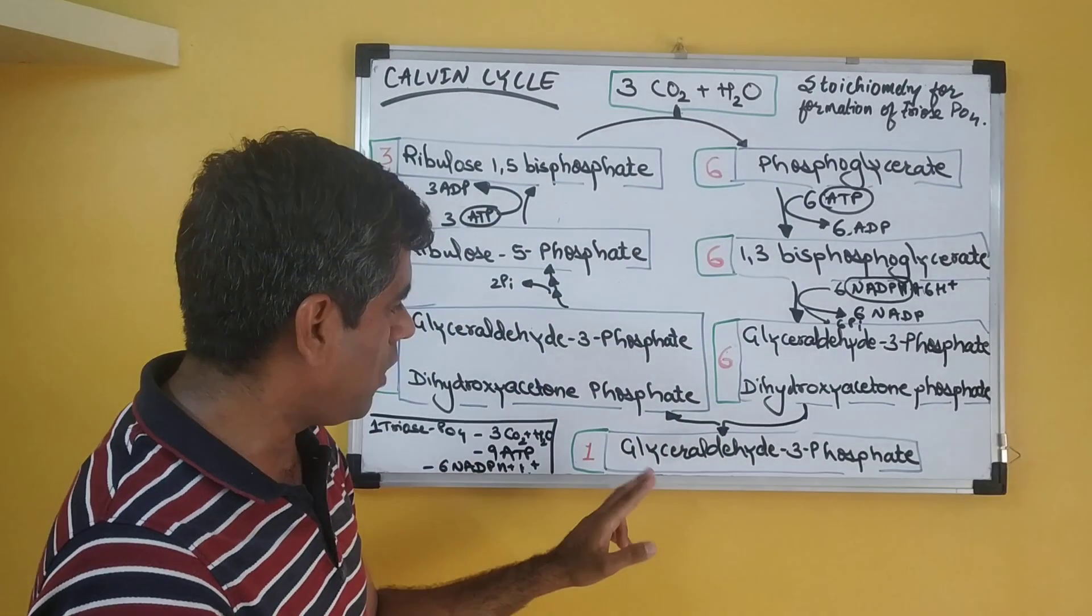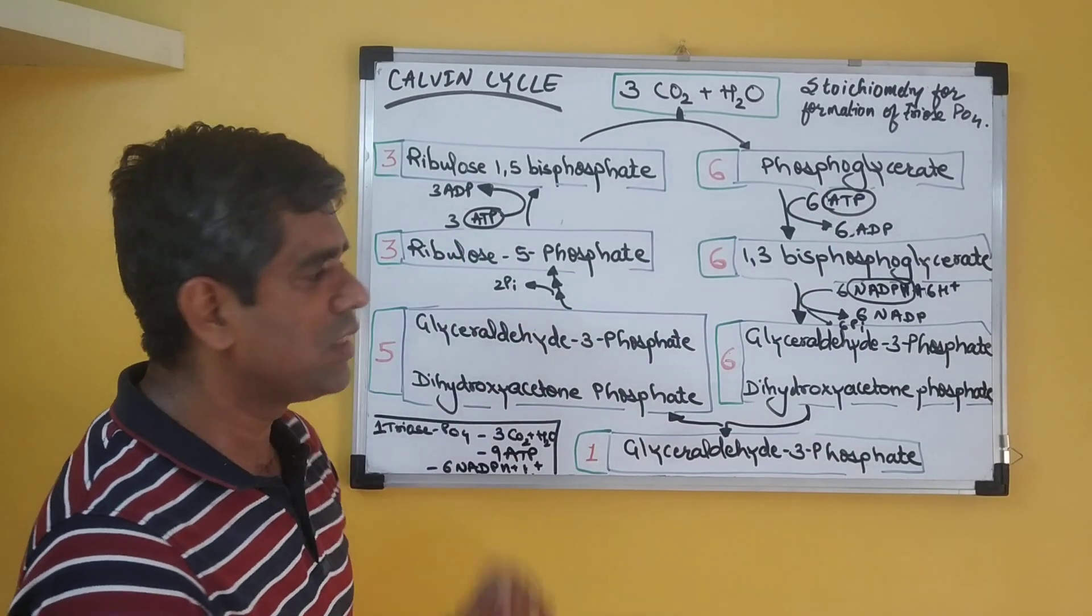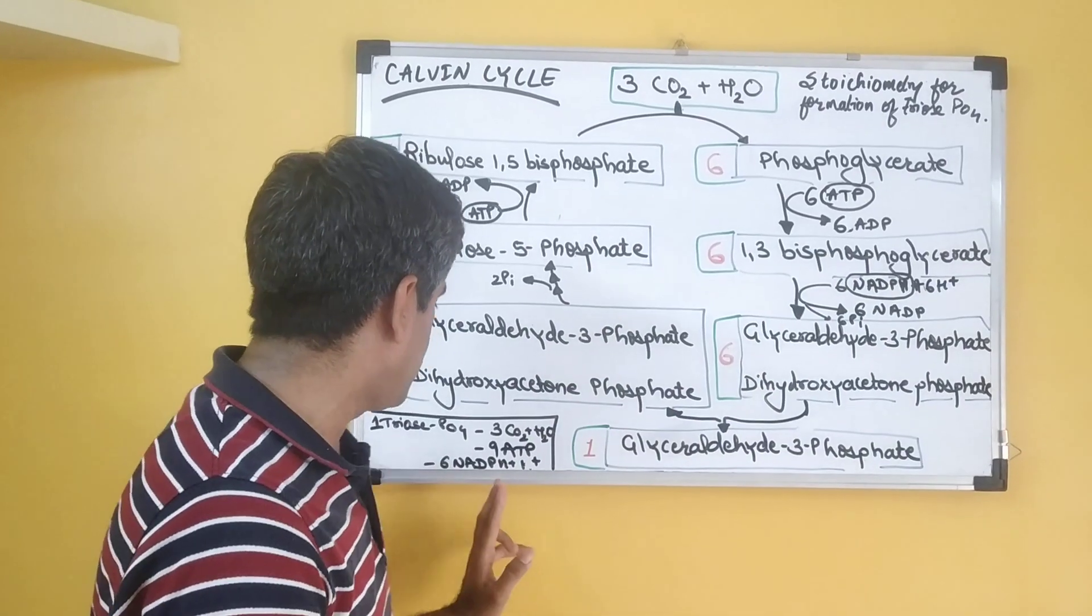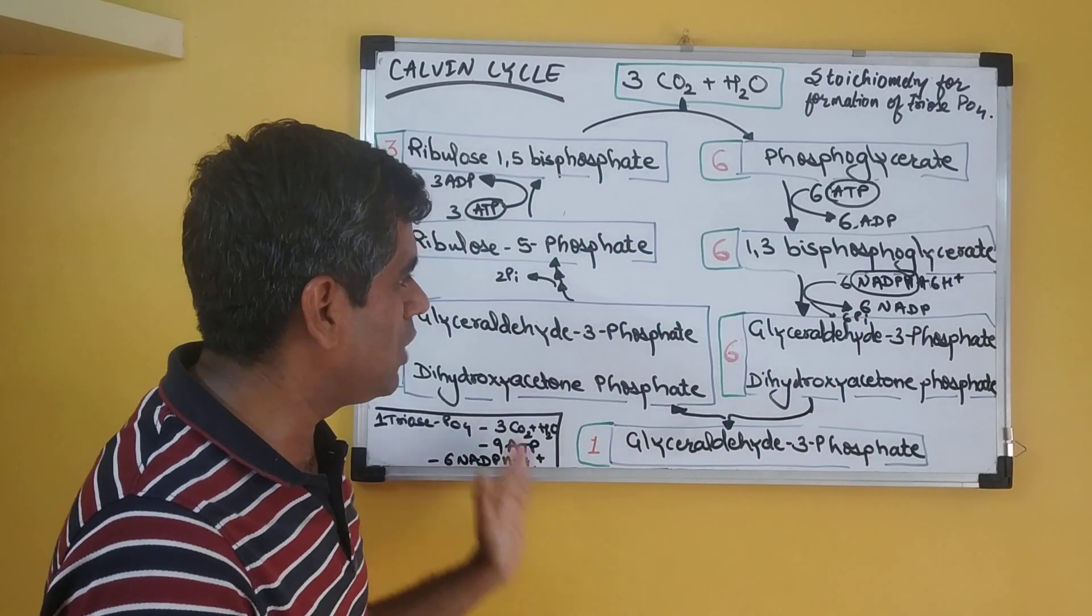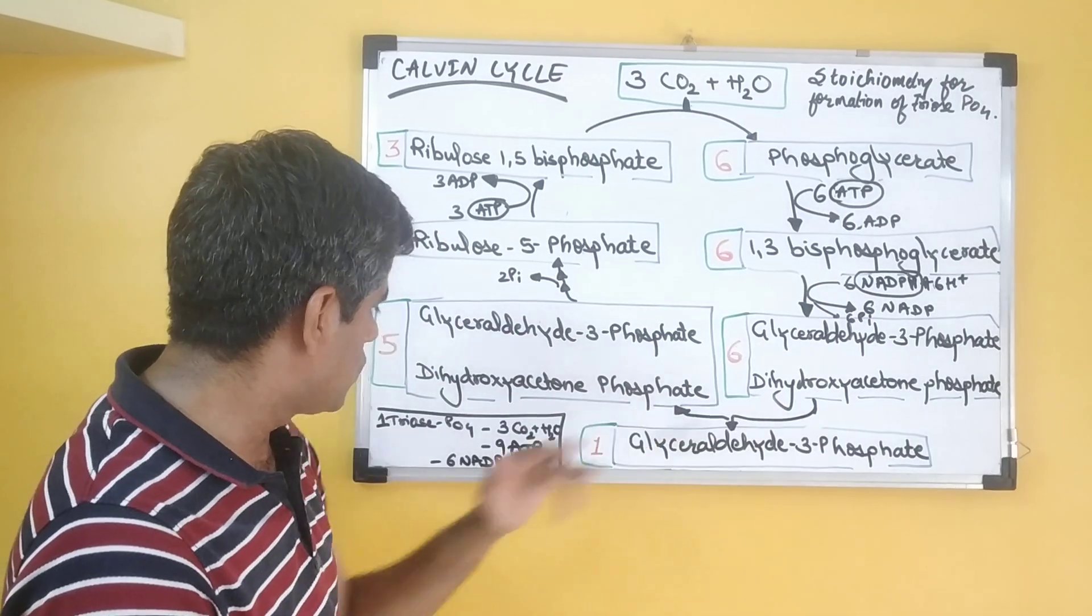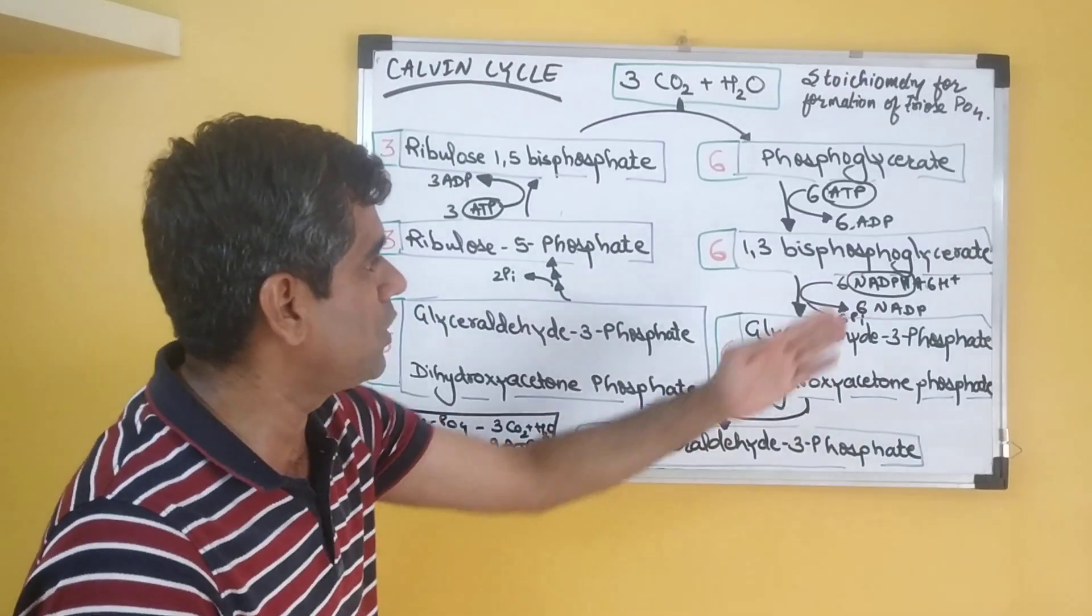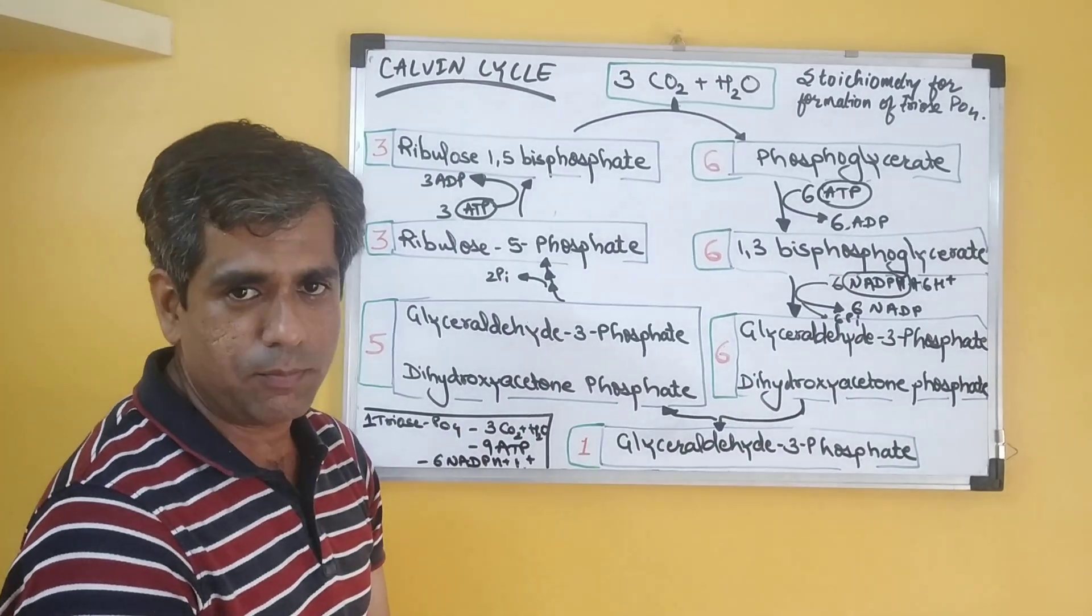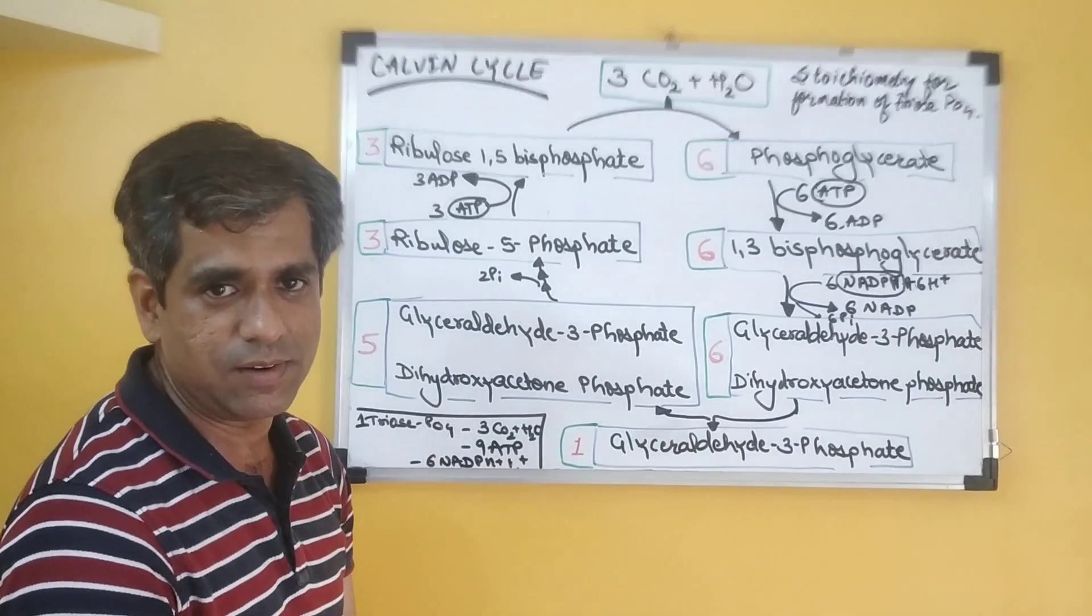So in the entire formation of this glyceraldehyde-3-phosphate, we have used 6 plus 3, that is 9 molecules of ATP, and we have used 6 molecules of your NADPH and H+. So for glucose, if you calculate, everything will be twice. So instead of 9 molecules of ATP now, you require 18 molecules of ATP, and instead of 6 molecules of NADPH, you require 12 molecules of your NADPH. So this is the stoichiometry for a typical Calvin cycle. Thank you.